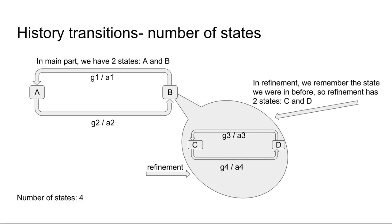If we use history transitions, then we have a four-state machine. When I move from B to A in a top-level machine, then I can remember where I was before in the B refinement. So if I return from A to B, then I can actually pick up where I left off in the refinement.